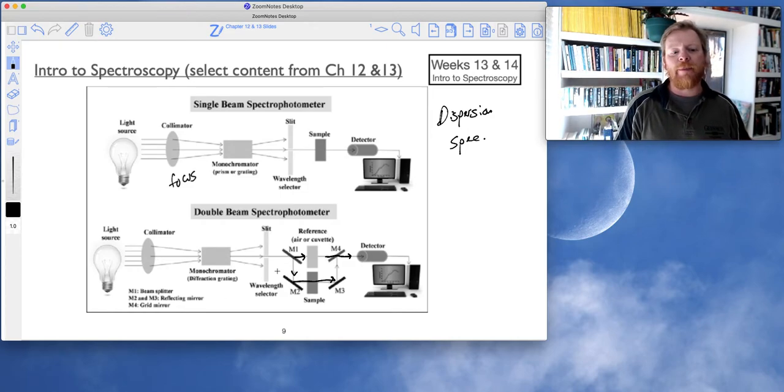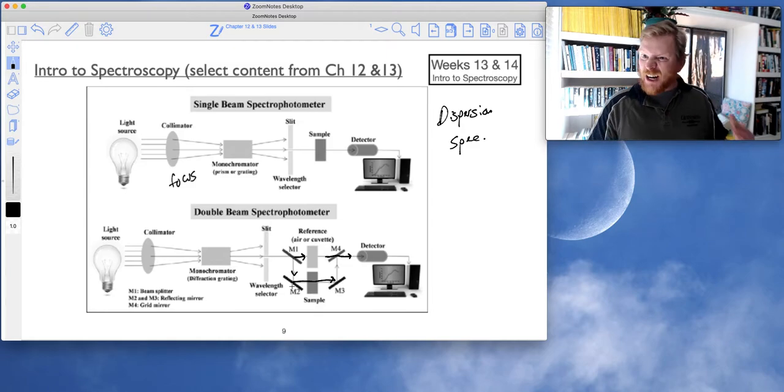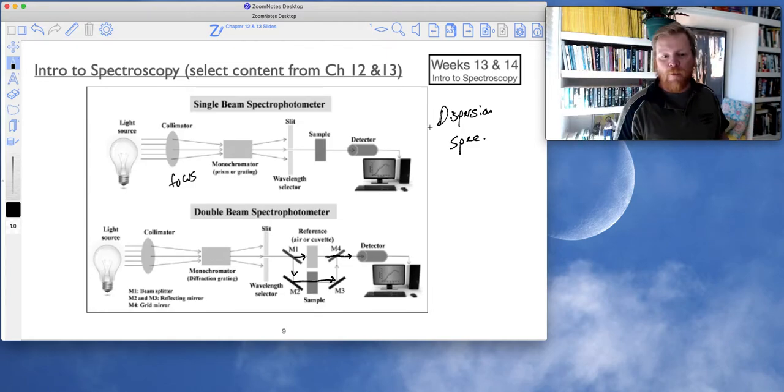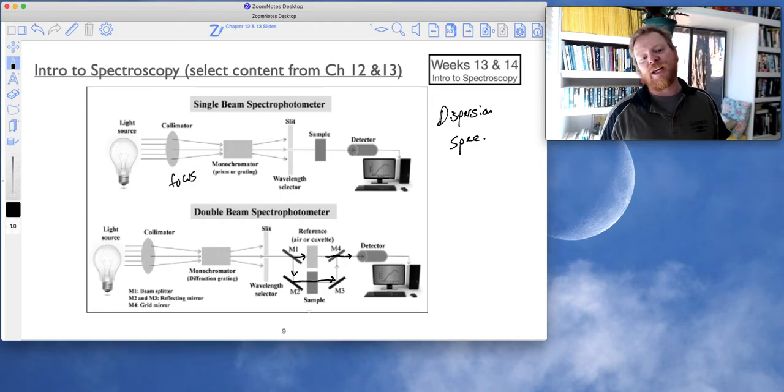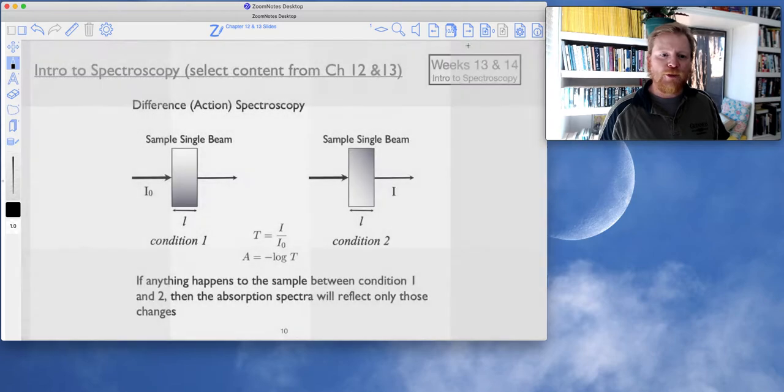So if you have a double beam instrument, these things are great. These things are very easy to use. You typically don't have as much background sample issues. If your background and sample weren't identical, with the exception of the analyte molecules, then you have less of those issues with the double beam instrument.